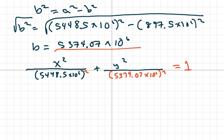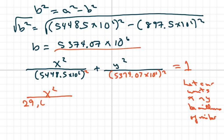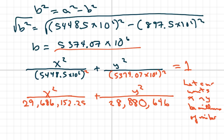Now, if you want to simplify the equation, we can let our units X and Y be millions of miles. If you do that, you get X squared over 29,686,152.25 plus Y squared over, Pluto's far away, 28,880,646. And don't forget your one.